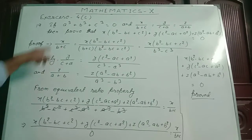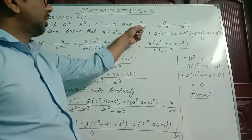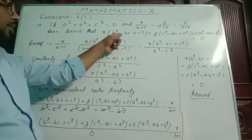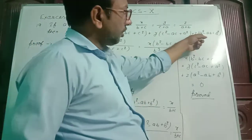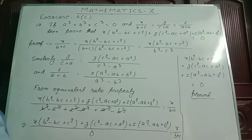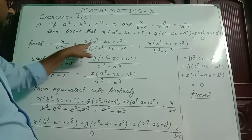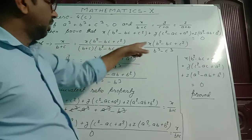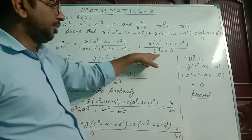In question number 19, if a cube plus b cube plus c cube equals 0, and x by b plus c equals y by c plus a equals z by a plus b, then prove that x into b square minus bc plus c square plus y into c square minus ac plus a square plus z into a square minus ab plus b square equals 0. For that, I have taken the first piece: x by b plus c, and multiplied numerator and denominator by b square minus bc plus c square. So I got x into b square minus bc plus c square, and the denominator becomes b cube minus c cube. This is the formula.